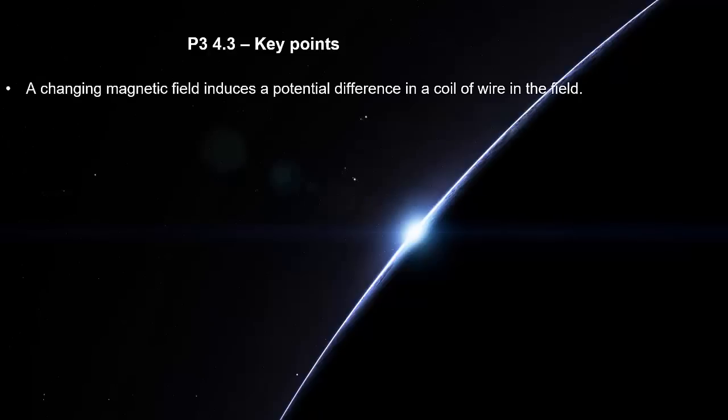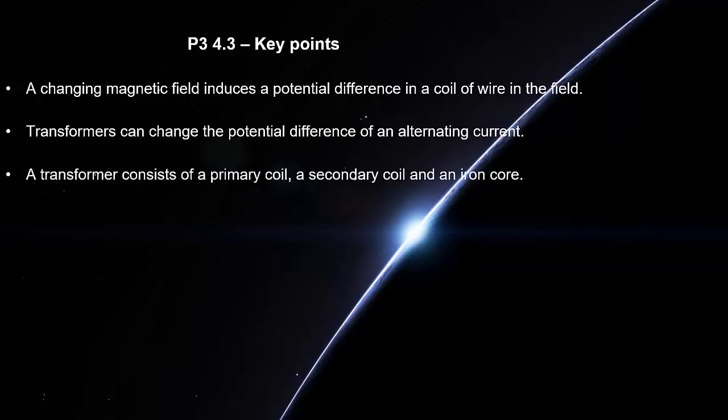A changing magnetic field induces a potential difference in a coil of wire in the field. Transformers can change the potential difference of an alternating current. A transformer consists of a primary coil, a secondary coil and an iron core.